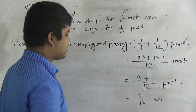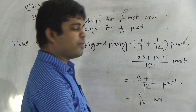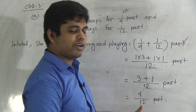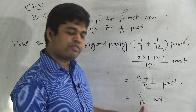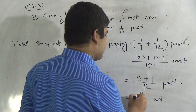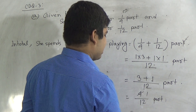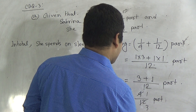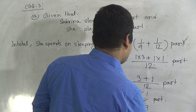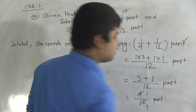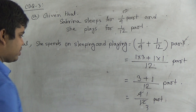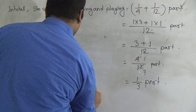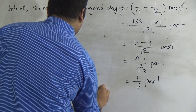Now we reduce 4/12 to its lowest term. Both 4 and 12 are divided by 4. 4 divided by 4 gives 1, and 12 divided by 4 gives 3. So the answer is 1/3 part. Answer: 1/3 part.